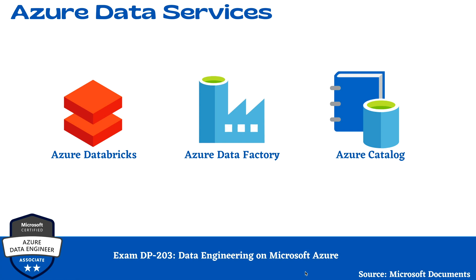Data Catalog is used by analysts, data scientists, developers, and others to discover, understand, and consume data sources. It features a crowdsourcing model of metadata and annotations. In a central location, an organization's users contribute their knowledge to build a community of data sources owned by the organization. Data Catalog is a fully managed cloud service where users discover and explore data sources and help document information about those sources.